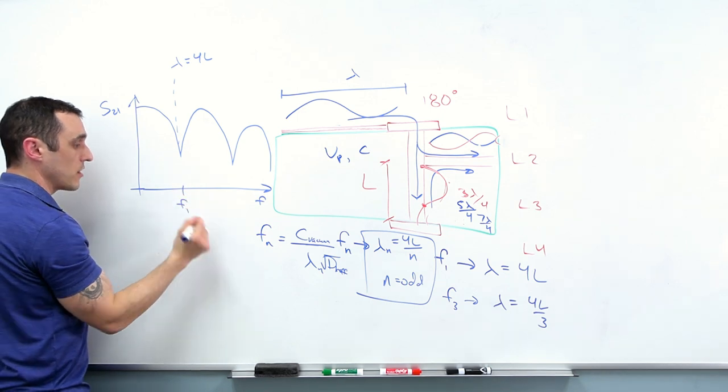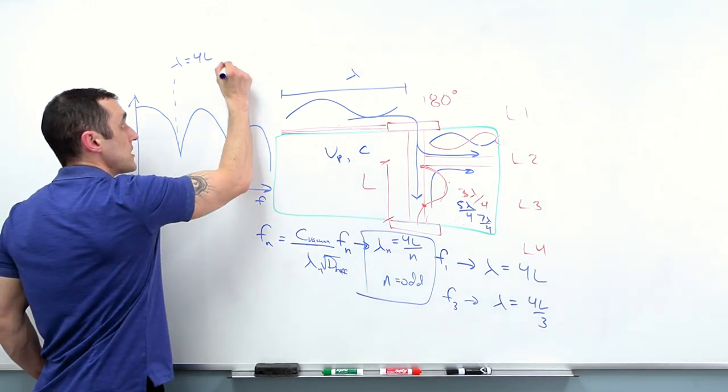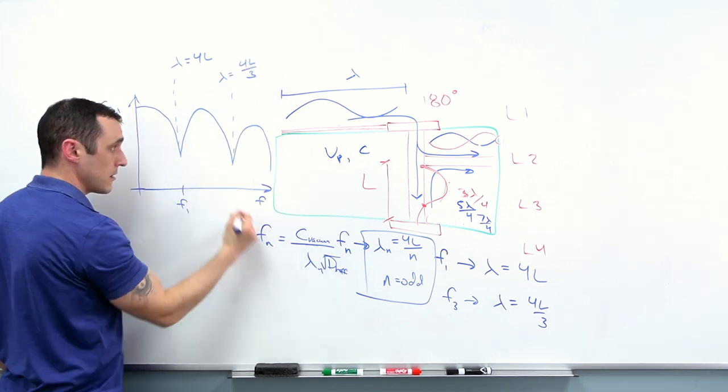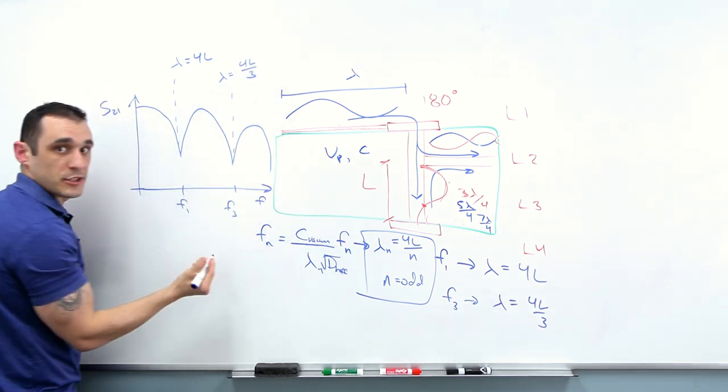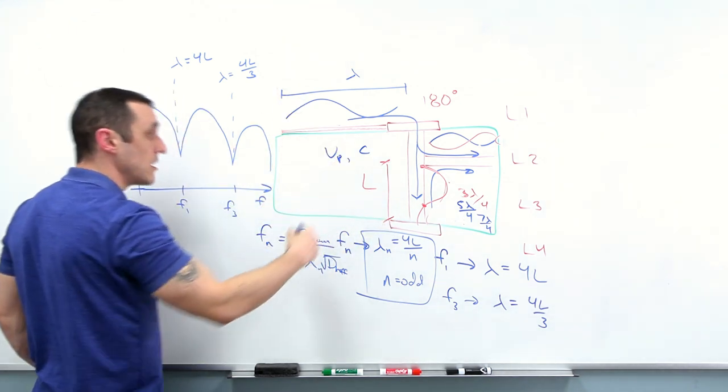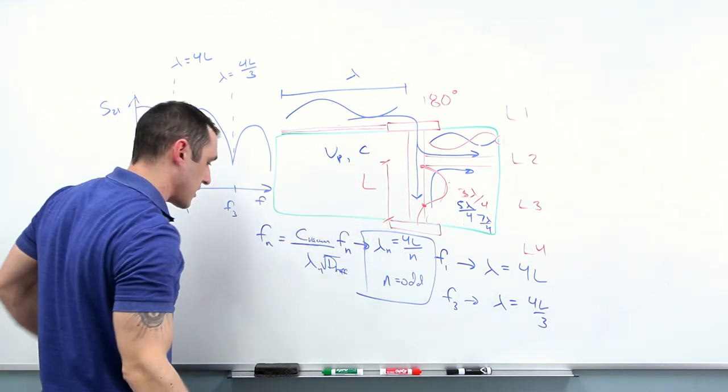So this right here corresponds to lambda equals four times the length of the stub. So this is my F sub one value here. This is lambda equals four L over three is my F sub three value and so on and so forth. So the next one would be F sub five, F sub seven and so on and so forth, all the way out into infinity.